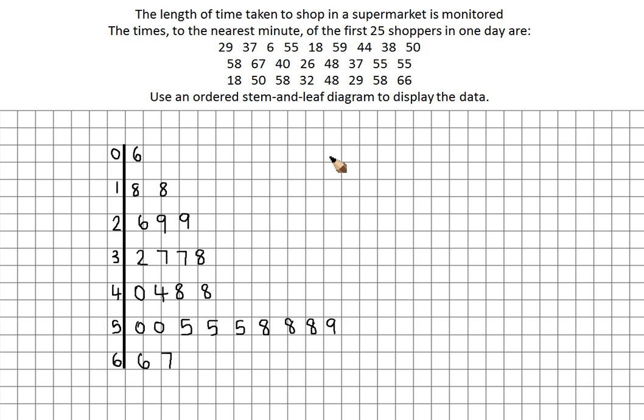For our final mark, we need a key. You can pick any one of these. I'm just going to pick the first one off the list. So 2, 9, means 29 minutes.